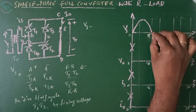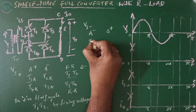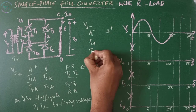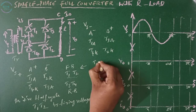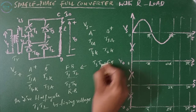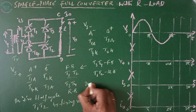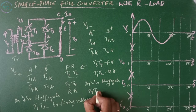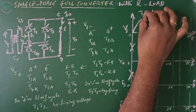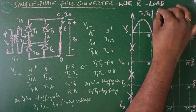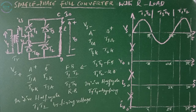When Vs is negative, that is the negative half cycle from pi to 2-pi, terminal A is negative and terminal B is positive. Then T1's anode is negative, T4's cathode is negative, T3's anode is positive, and T2's cathode is positive — so T3 and T4 are forward biased and T1, T2 are reverse biased. In the negative half cycle, T3 and T4 can turn on by giving a firing signal. This pattern repeats again and again.